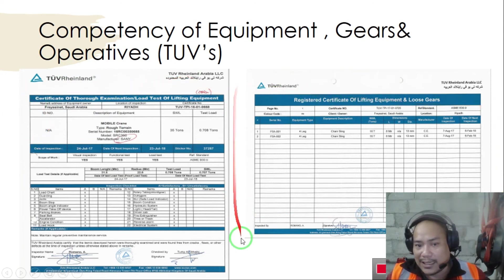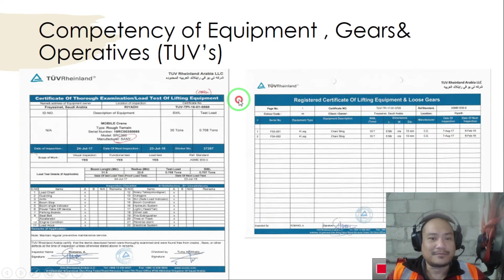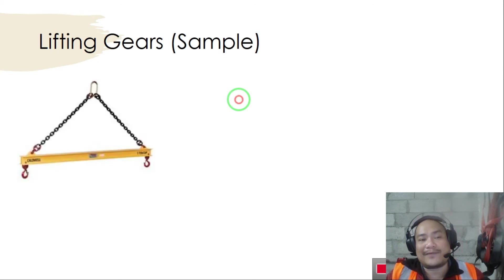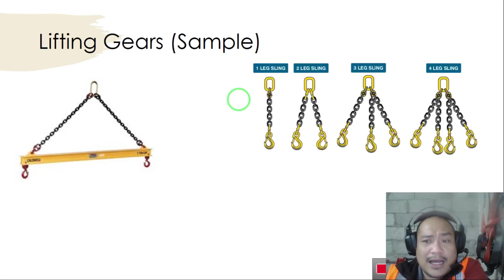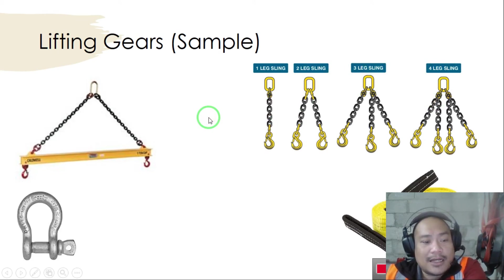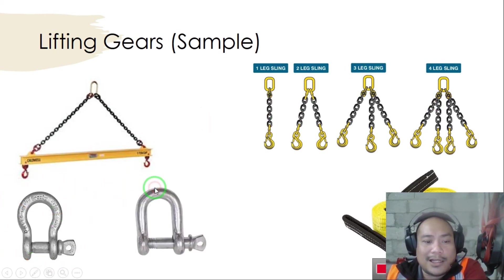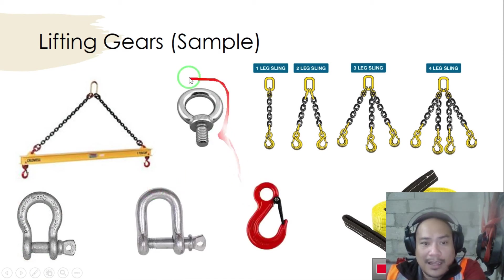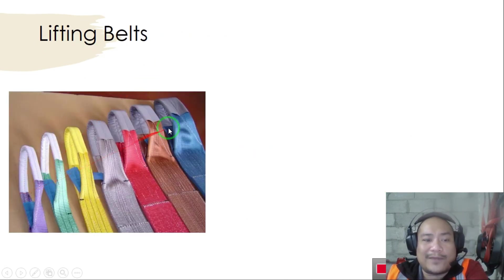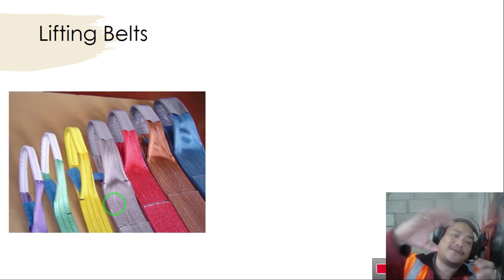This is for the crane and this is for the lifting gear. Samples of lifting gear are: spreader beams, lifting chains — which come in four-leg, three-leg, two-leg, and one-leg configurations — lifting belts, shackles such as a bow shackle, hooks, and lifting eyes. For lifting belts, different colors mean different capacity, different length, and different weight rating.